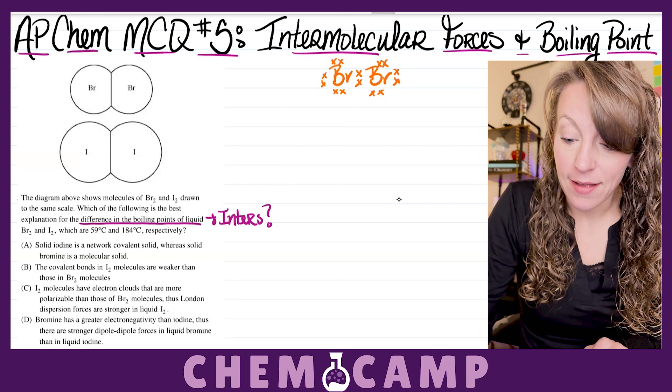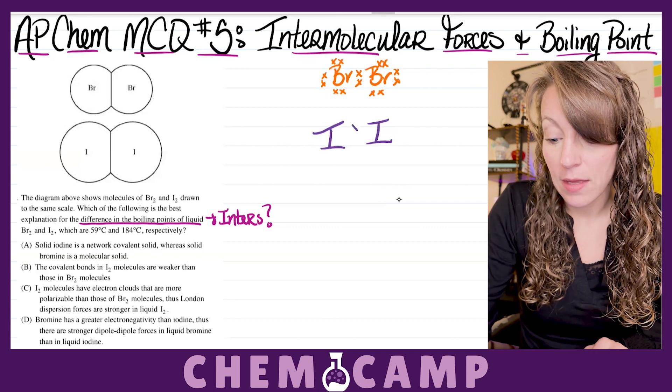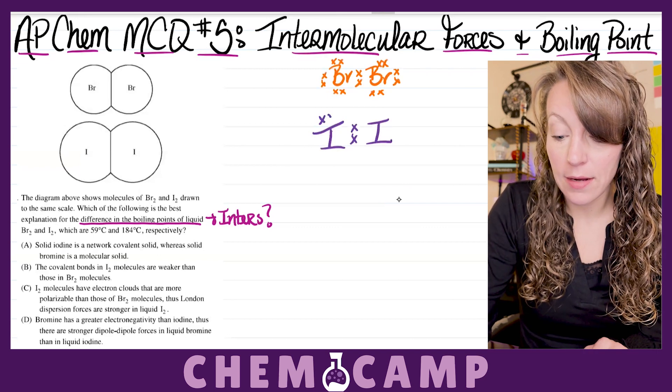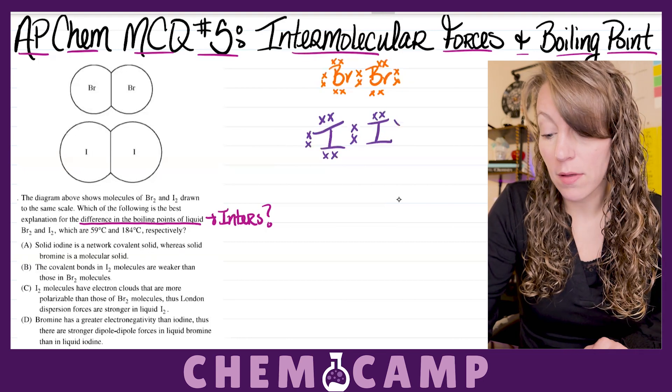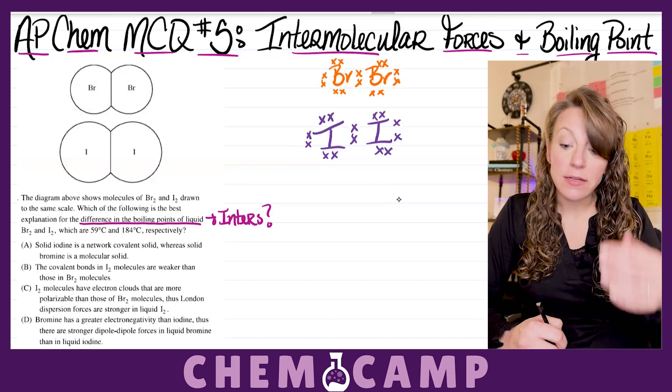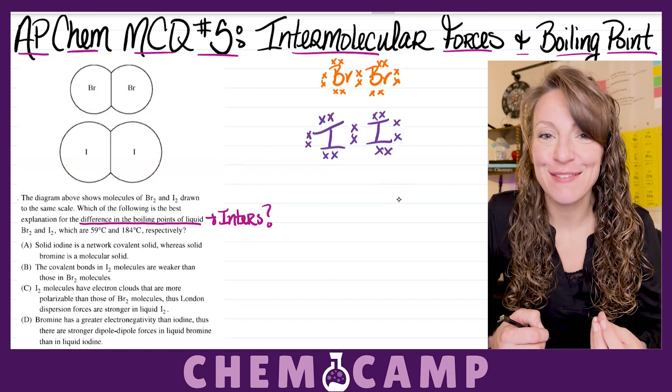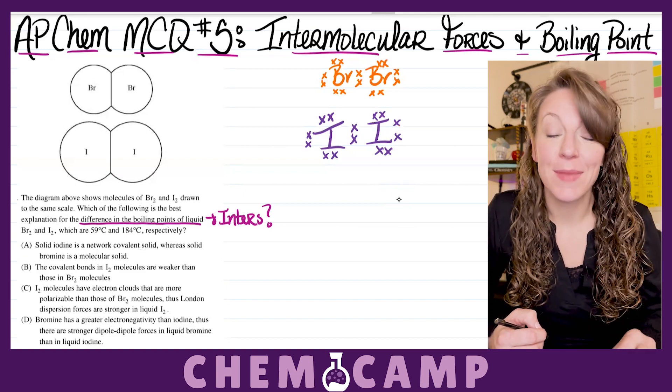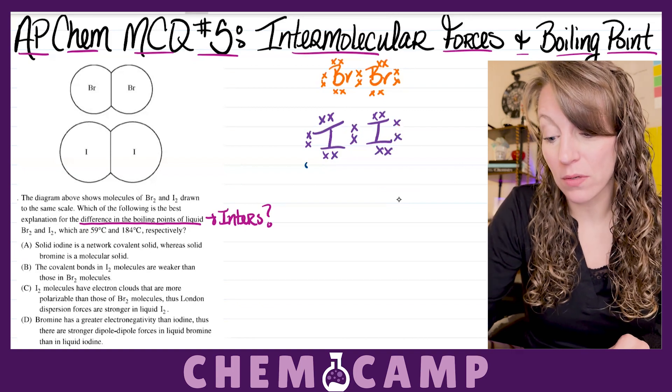Now, iodine, believe it or not, is going to be very similar. Both bromine and iodine have seven valence electrons, so they both form very similar structures. In fact, since both of these are linear molecules and they're perfectly symmetric, they happen to be both non-polar molecules.